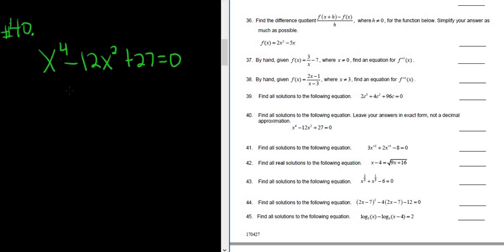Okay, this should factor nicely. So if it does, it's going to look like this: x squared, x squared equals 0.